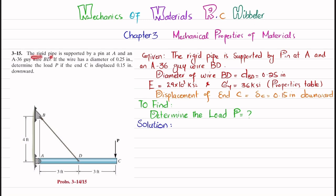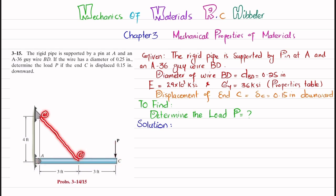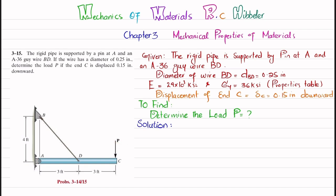The statement of the problem: a rigid pipe is supported by a pin at A and an A36 guy wire BD. The wire has a diameter of 0.25 inches. Determine the load P if the end at C is displaced 0.15 inch downward. The pipe has a point load at C and the A36 wire BD supports it, with a pin support at A.